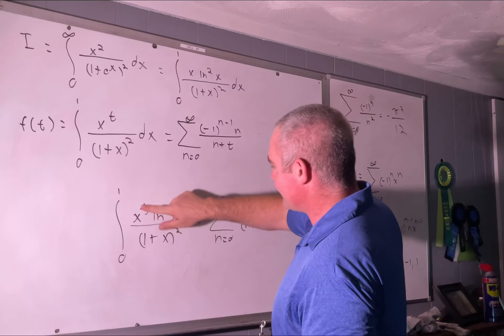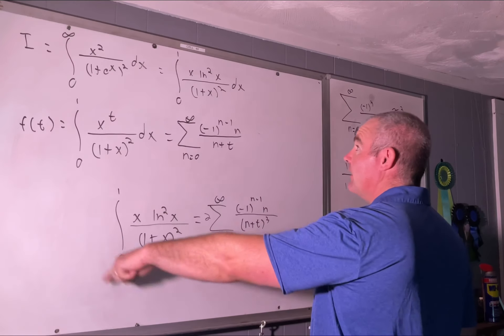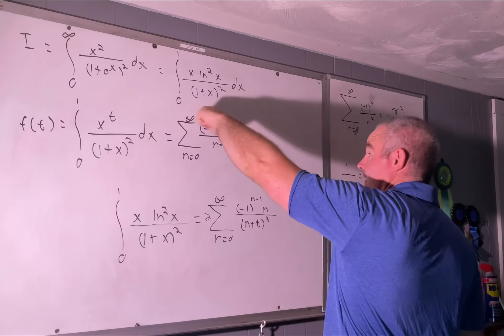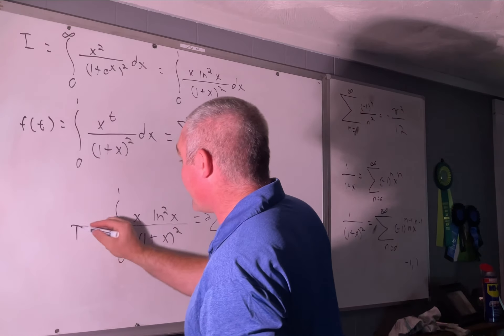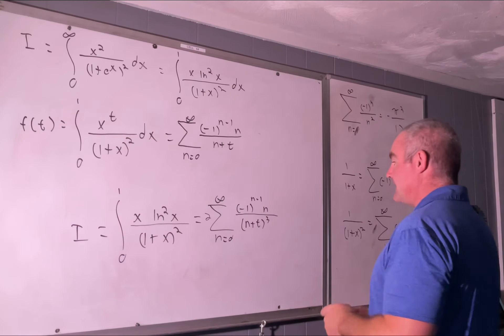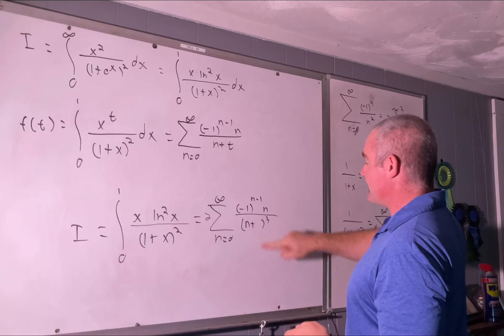Now with t=1, it'll just give us x. Yeah, that's exactly this, which is I, so we can call everything here I instead of f''(t). Now we plug in 1 for t here.